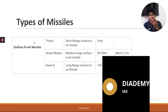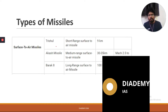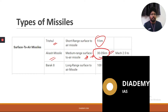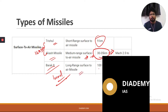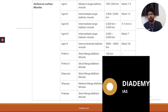Next, surface-to-air missiles — fired from the surface to hit targets in the air. Trishul is a short-range surface-to-air missile with a range of 9 km. Akash is a medium-range, indigenously developed surface-to-air missile with a range of 30 to 35 km. Both Trishul and Akash are part of the Integrated Guided Missile Development Program. Barak, developed by Israel (with India in a joint venture), is a long-range surface-to-air missile with a range of 100 km at Mach 2.